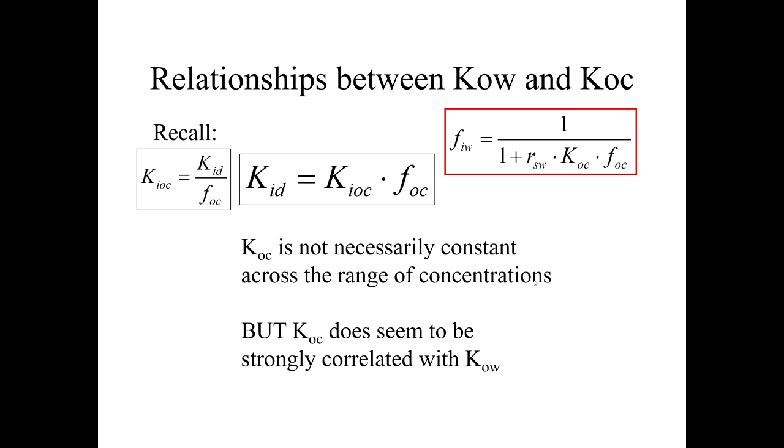One of the important and beautiful things about KOC is that KOC is related to KOW. That gives us a handle on how to predict it because KOW is something we can relatively easily measure for most organic chemicals. Even if we can't measure it, we can predict it. When we get to the lecture on prediction, you'll see that you can look at the structure of the chemical and predict its KOW value, and from that you can get a KOC value.